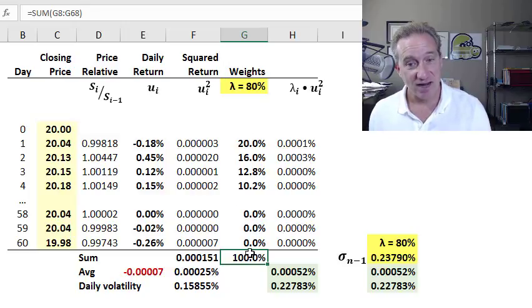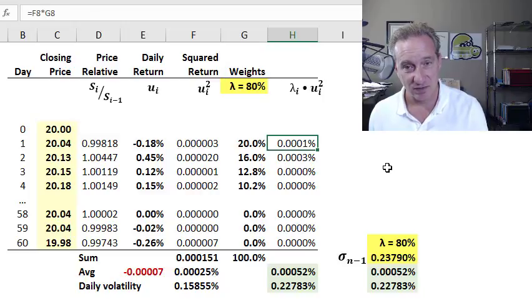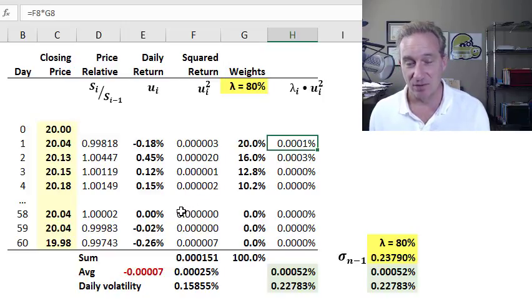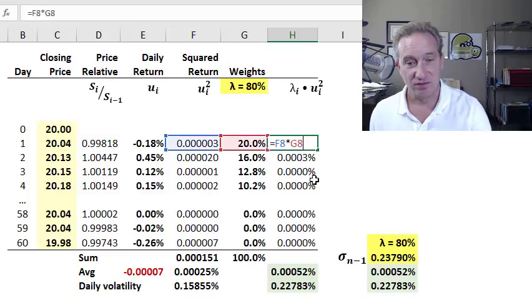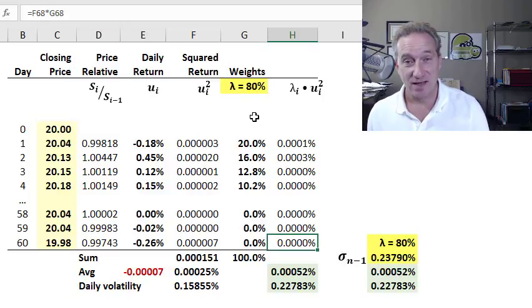Okay, but now that I have weights, here's the key difference between the exponentially weighted moving average and the historical standard deviation. We just multiply the squared return by the weight, and then we have a series of not equally weighted squared returns, but rather weighted in exponential decline.